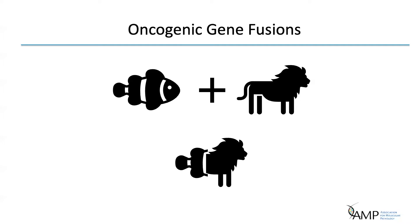Oncogenic gain-of-function fusions in cancer usually look a bit like this fish-lion. The left partner, the fish, acts as the on switch or driver of expression of the fusion, while the right partner, the lion, acts as the business end of the fusion. Typical examples of this configuration include the kinase gene fusions that we've seen many times, including ALK, RET, ROS1, and the NTRK genes.